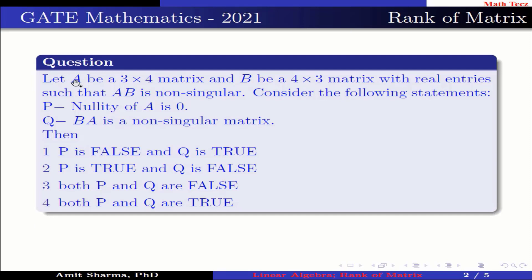The question is: let A be a 3×4 matrix and B be a 4×3 matrix with real entries such that AB is non-singular. Consider the following statements. Statement P: nullity of A is 0. Statement Q: BA is a non-singular matrix.